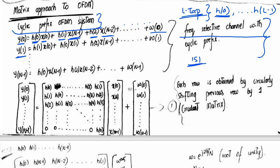For Y(1): on the first path H(0) I get X(1). On the second path H(1) I get the previous sample X(0). On the third path, previous to X(0), I get X(N−1). I hope these equations are clear — I also discussed this in the previous video. Now if I write these equations in matrix form, I get this matrix.